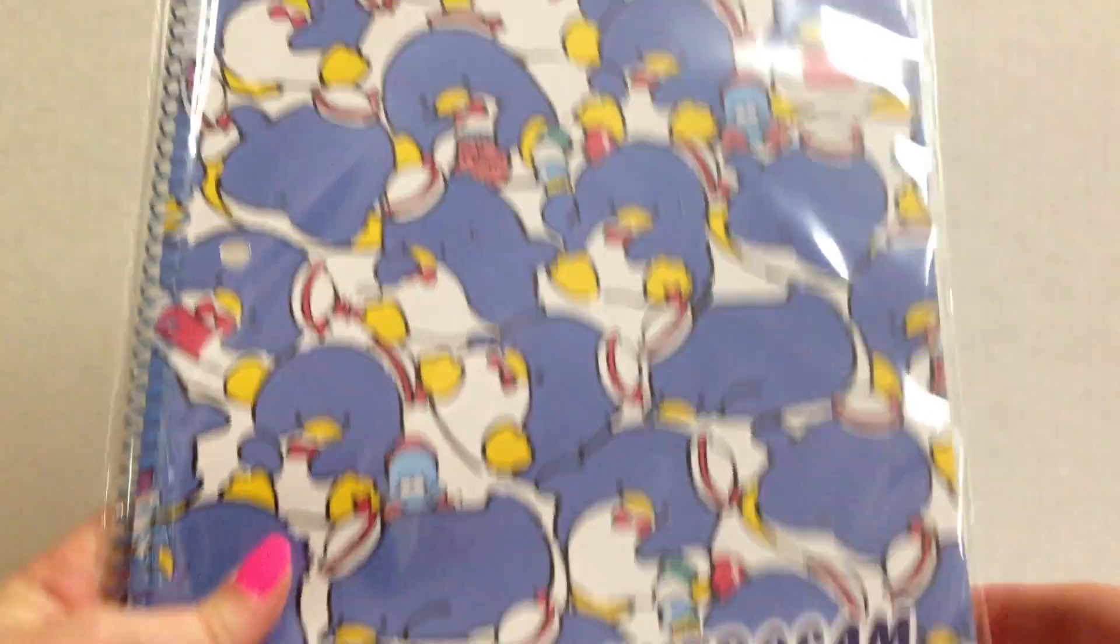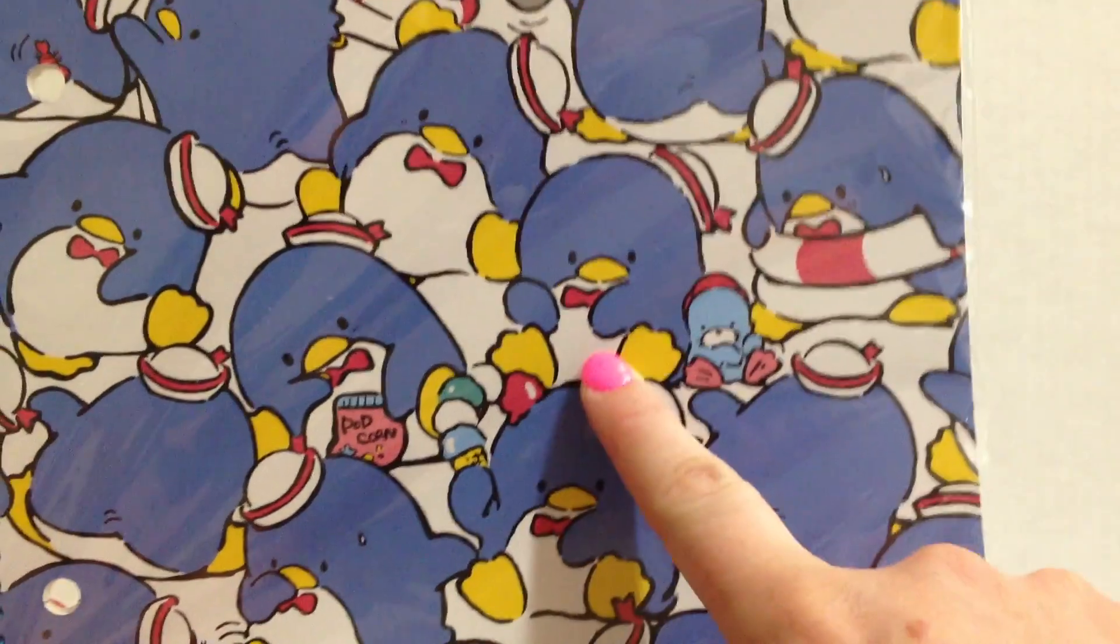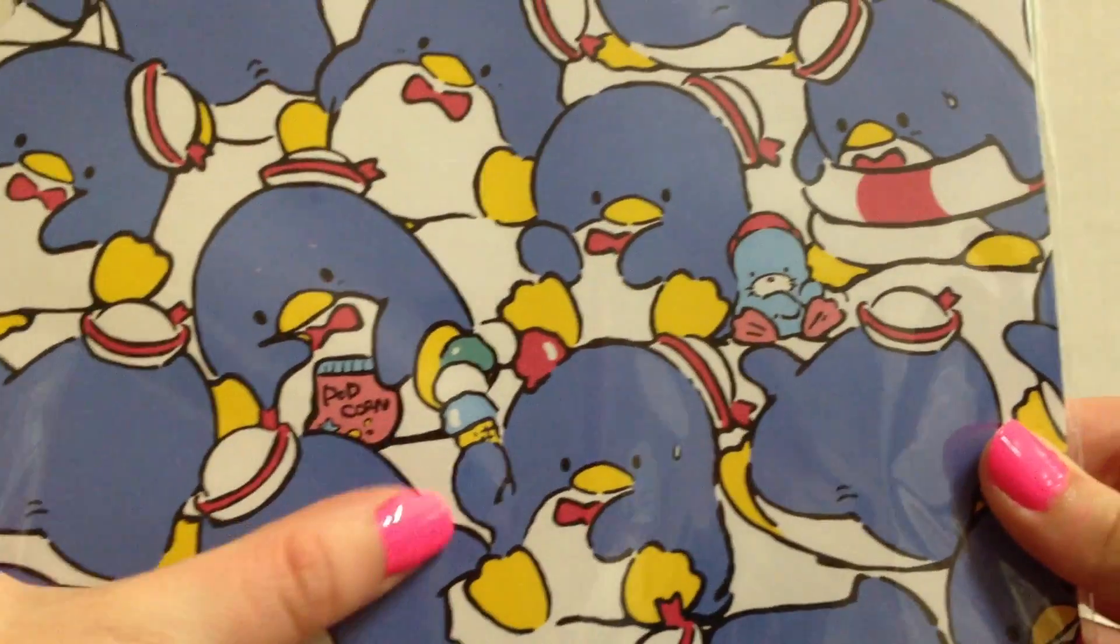And then the last thing is this Tuxedo Sam spiral notebook. My husband really loves Chip, which is Tuxedo Sam's little seal friend. So that's really cute and he's eating an ice cream cone and popcorn. It's really really cute. So that is all the Tuxedo Sam stuff that I got my husband that he was very happy about. I will be getting him to do a Tuxedo Sam collection soon for everyone that was asking, so I will be getting him to do that shortly, hopefully.